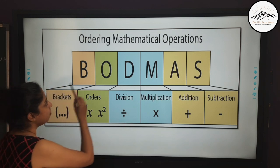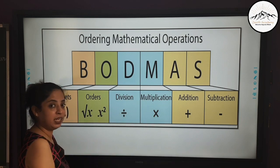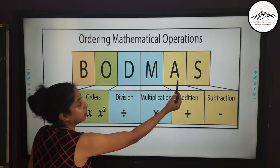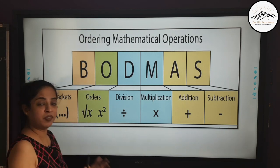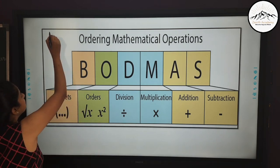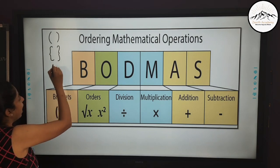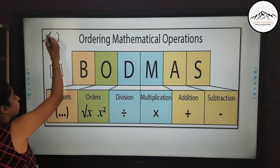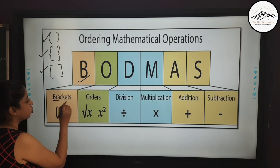We'll be learning a simple tool: BODMAS. It is also known as BIDMAS in many curriculums. We have to do our calculations in this order. First we do B, that is Brackets. When you solve integers you have different types of brackets — the simple bracket, the curly bracket, and the square bracket. You will follow this order: first solve the simple bracket, then curly brackets, then square brackets.